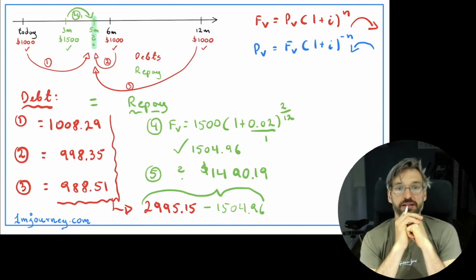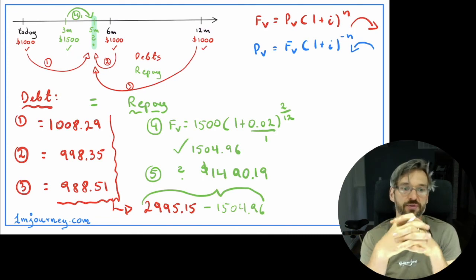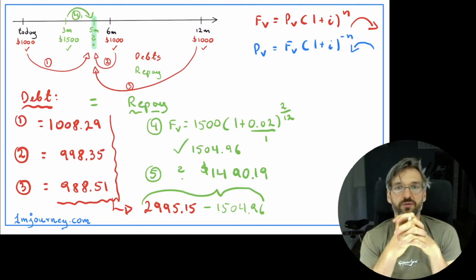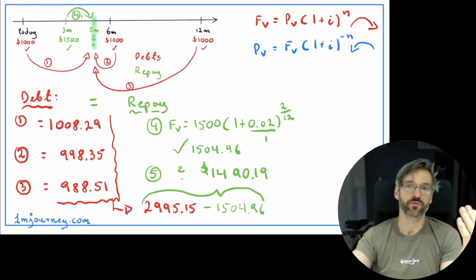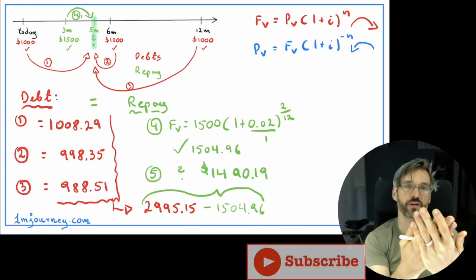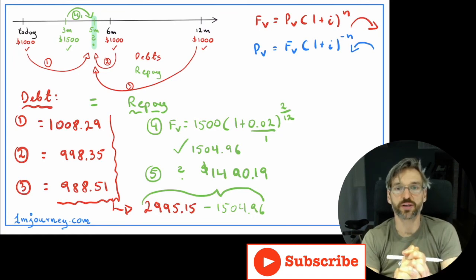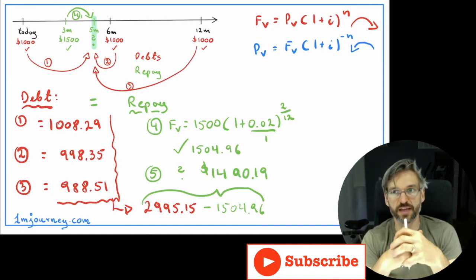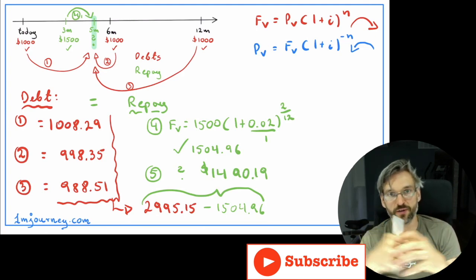So it is an involved question and it does cover equivalent values. Remember we moved everything to five months — that was our focal date. We calculated all our debt and moved it to that one date. We took all our repayments and moved them to that one date. Now that we have them at the same time, we can add and subtract them all. I hope you found this useful. Thanks for watching — looking forward to you subscribing, and maybe give it a thumbs up if you found it useful. Take care everybody, cheers.